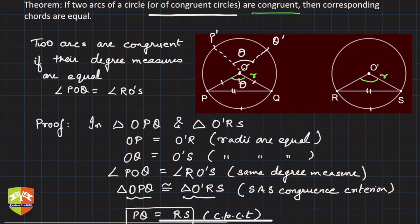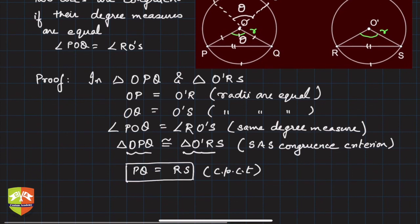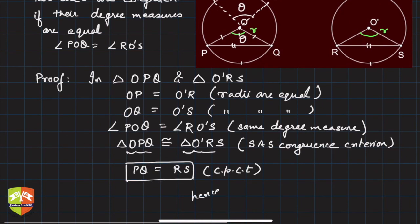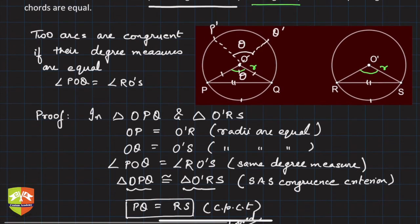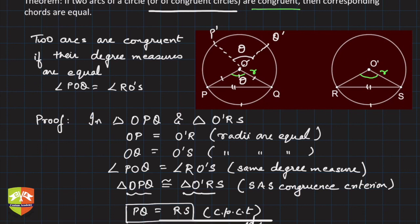So if two arcs of a circle are congruent, then corresponding chords are equal—hence proved. We'll take up another theorem in the next session. Hope you understood this theorem.